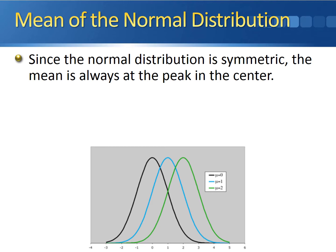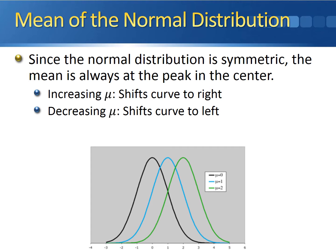Since the normal distribution is symmetric, the mean is always going to be at the peak in the center. Take the blue curve in the image at the bottom — it has a population mean of one, so it's centered directly above one. If we increase mu, all that happens is the curve gets shifted over to the right, like picking up the blue curve and moving it one unit to the right without changing the spread at all. If we decrease mu, it gets shifted to the left — moving from centered at one down to centered at zero, which is the black curve. No matter what we do to the mean, as long as we don't adjust the standard deviation, the spread doesn't change. All three curves have the exact same width and spread, so adjusting the mean doesn't impact the spread of the distribution at all.